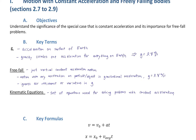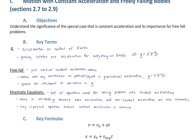The kinematic equations are a set of equations used for solving problems of constant acceleration. The name is misleading because zero acceleration and non-constant acceleration are also kinematic. But when people say kinematic equations, they mean the set of equations that apply to constant acceleration, whether it's free fall or some other constant acceleration. They're very important equations because constant acceleration is common — a big reason is free fall, because anytime you drop something, it's approximately accelerating at a constant acceleration.